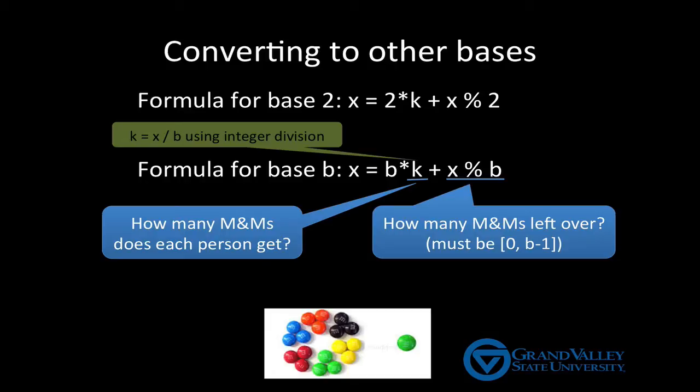Notice that x mod B must be in the range 0 to B minus 1. We can't have B or more M&Ms left over because if there were, there would be enough M&Ms for each person to have at least one more.